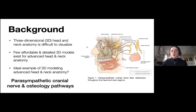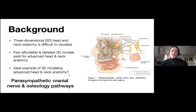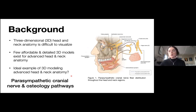In order to come up with a 3D model that might accurately detail some of this complex anatomy, I decided to use the parasympathetic cranial nerves and associated osteological pathways as my difficult head and neck anatomy to visualize.